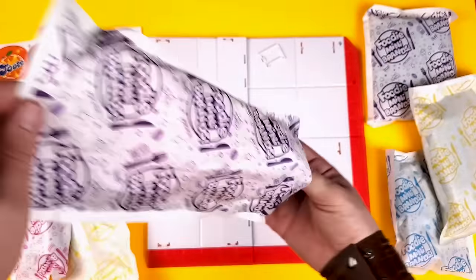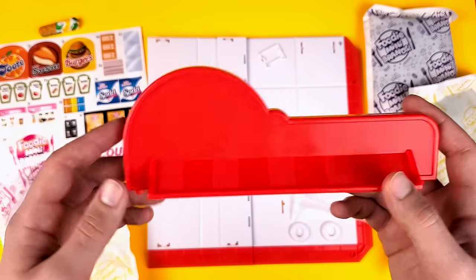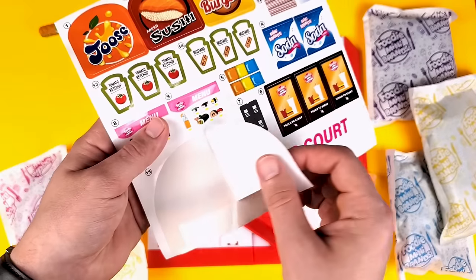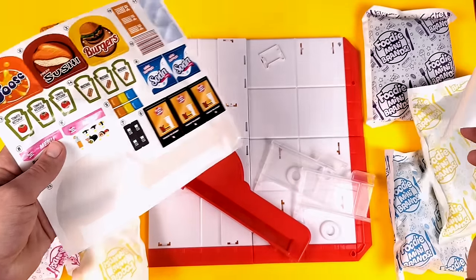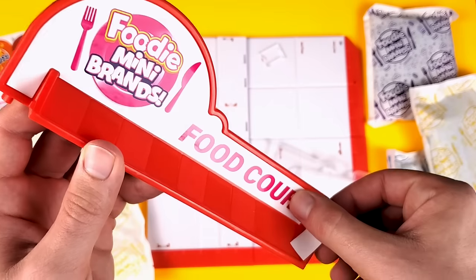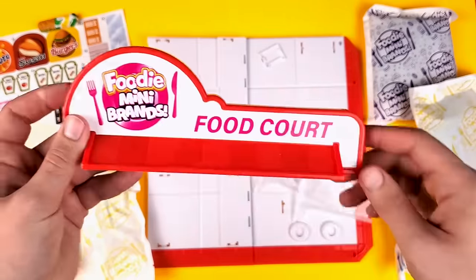So this is the next biggest bag and I'm guessing this is the sign of the food court. Yep, that's what it is. From pure experience, I think the best thing is to put the stickers on now and then put them together, because otherwise it's going to be really hard to add the sticker afterwards. Okay, that's not bad at all, actually looks really good, doesn't it?